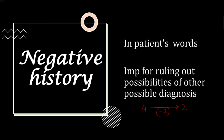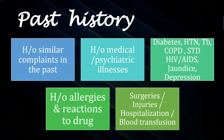Then comes the past history, where you ask about similar complaints in the past or any medical or psychiatric illnesses — such as diabetes, hypertension, TB, COPD (chronic obstructive pulmonary disease), STDs, HIV/AIDS, jaundice, depression — as well as allergies and drug reactions, surgeries, injuries, hospitalization, or blood transfusions. Relevant positive past history is written first, relevant negative past history next, and irrelevant but significant positive past history at the end.